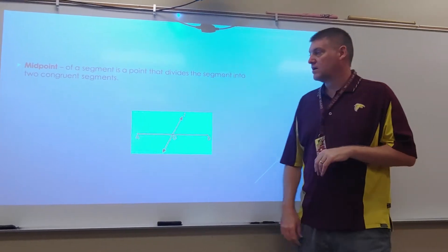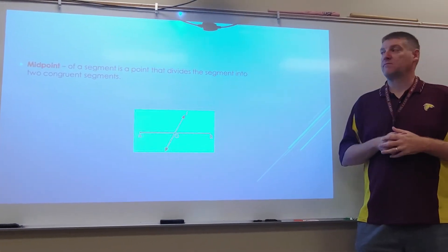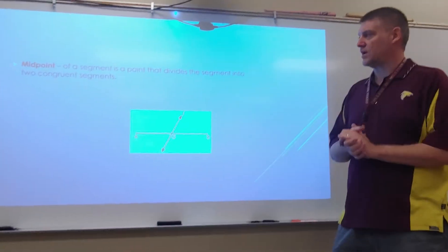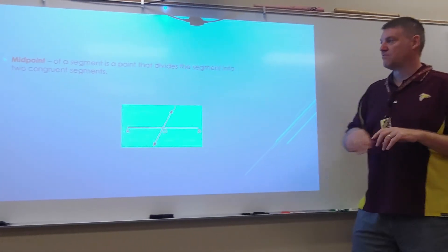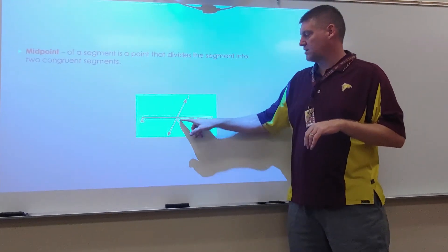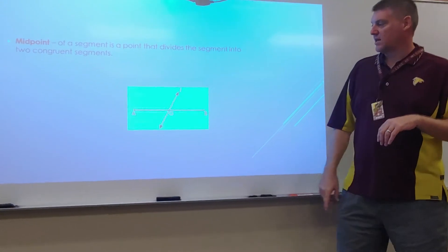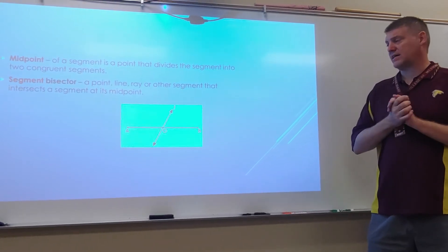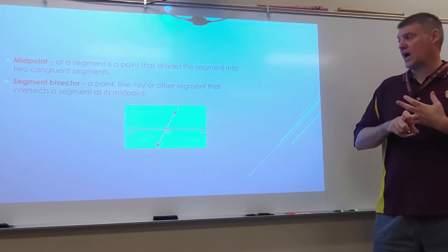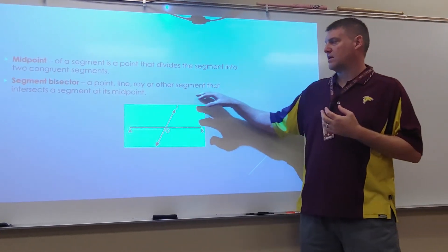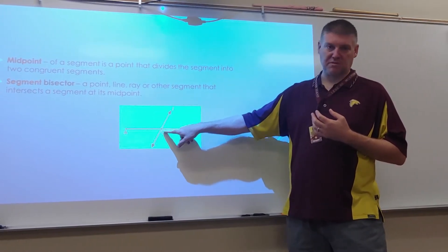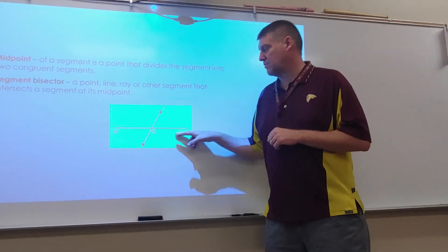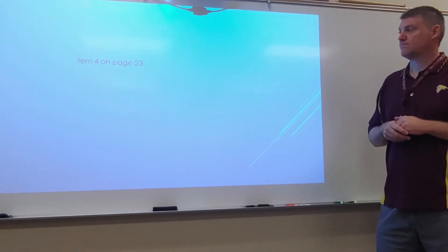We're going to talk about midpoint. The midpoint of a segment is a point that divides the segment into two congruent segments. A lot of times, people think of that as being kind of the middle. If O is my midpoint, it's just going to say that AO is congruent to OB. A segment bisector is a point, line, ray, or other segment that intersects a segment at its midpoint. Here, line L would be a segment bisector because it's bisecting AB.